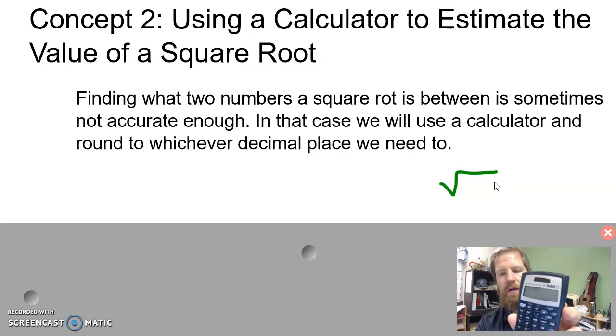And then hit equals. I shouldn't have used 25 because we're looking at estimating square roots, so we're not looking at perfect squares. So let's do the square root of 31.